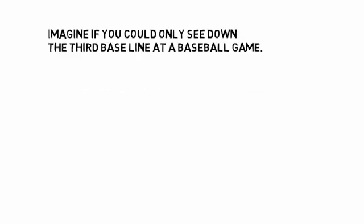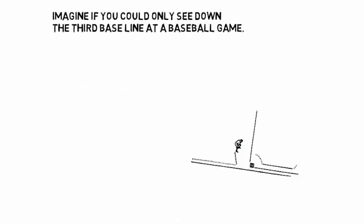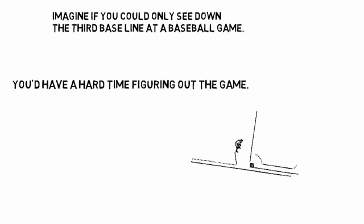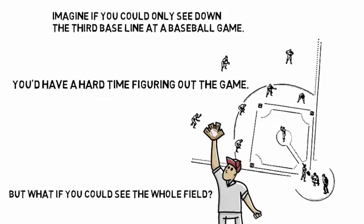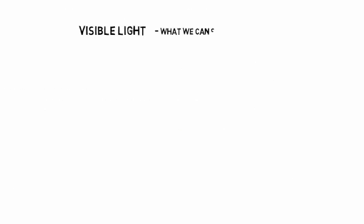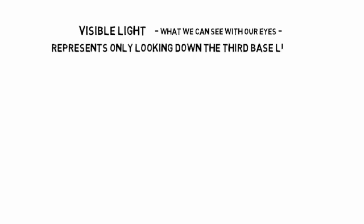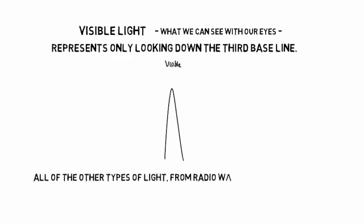We need to look at the universe in all kinds of light to understand it. Imagine if you could only see down the third baseline at a baseball game — you'd have a hard time figuring out the game. But what if you could see the whole field? Visible light, what we can see with our eyes, represents only looking down the third baseline. All of the other types of light, from radio waves to gamma rays, fill in the rest of the field.